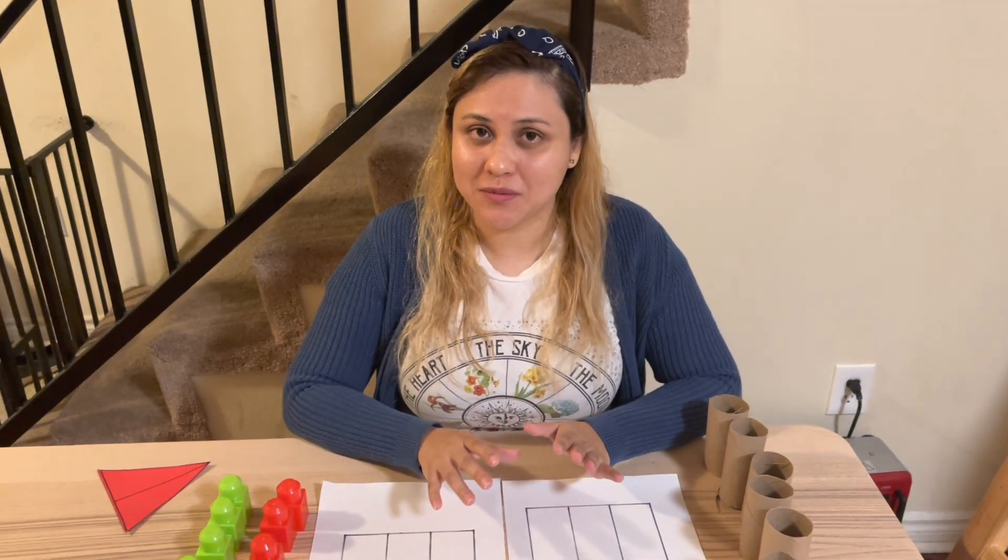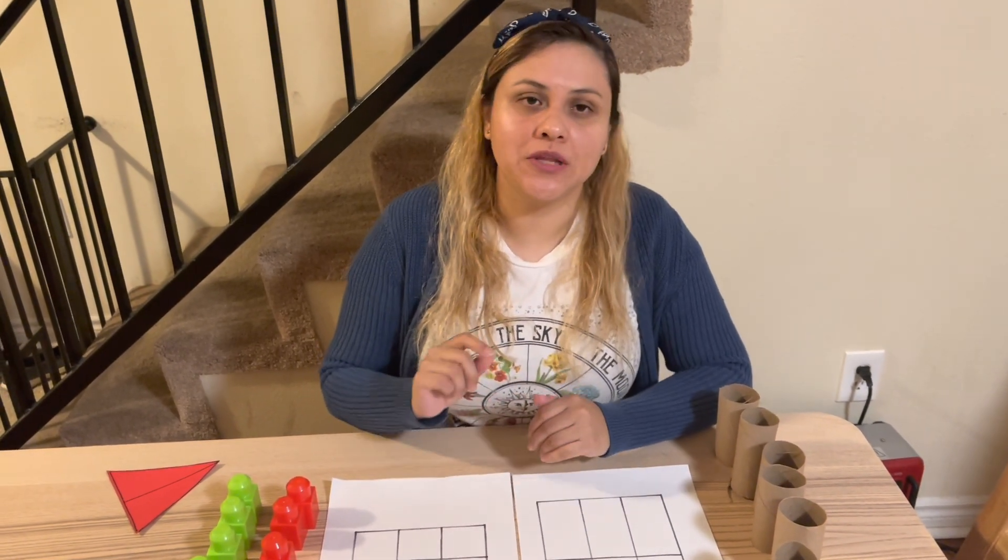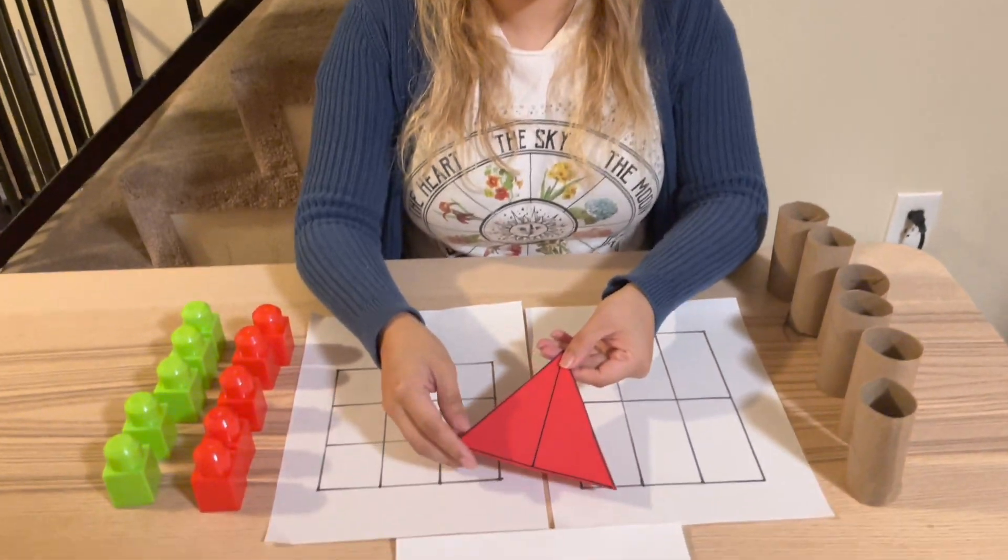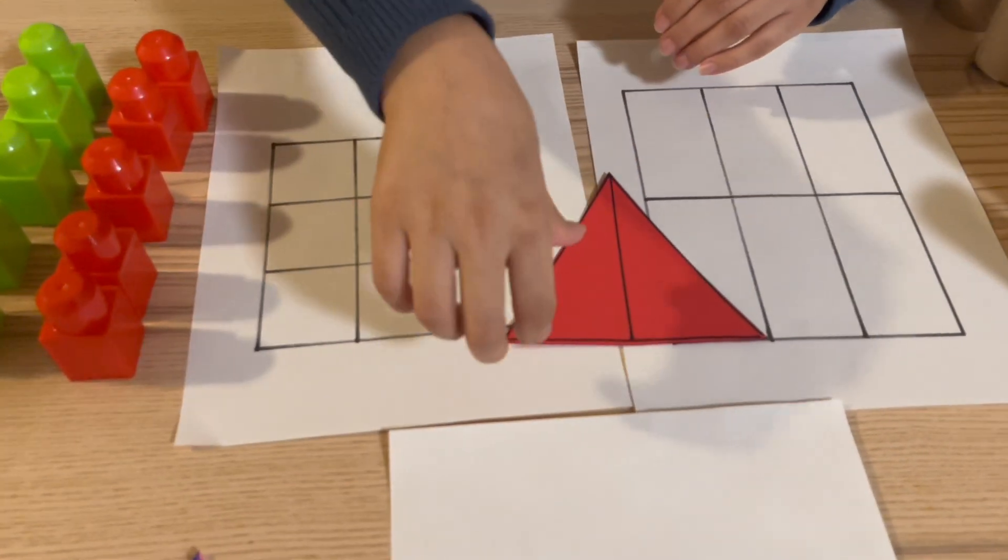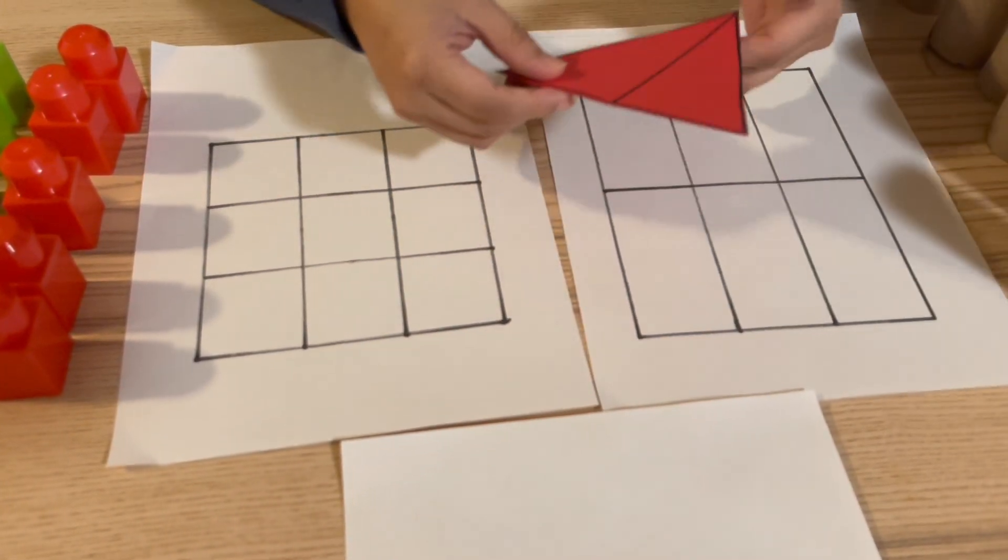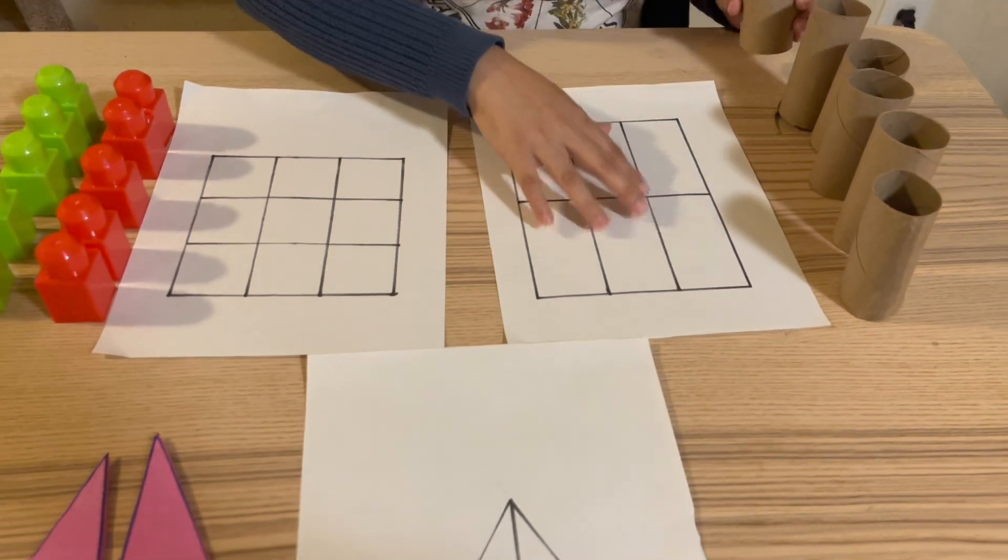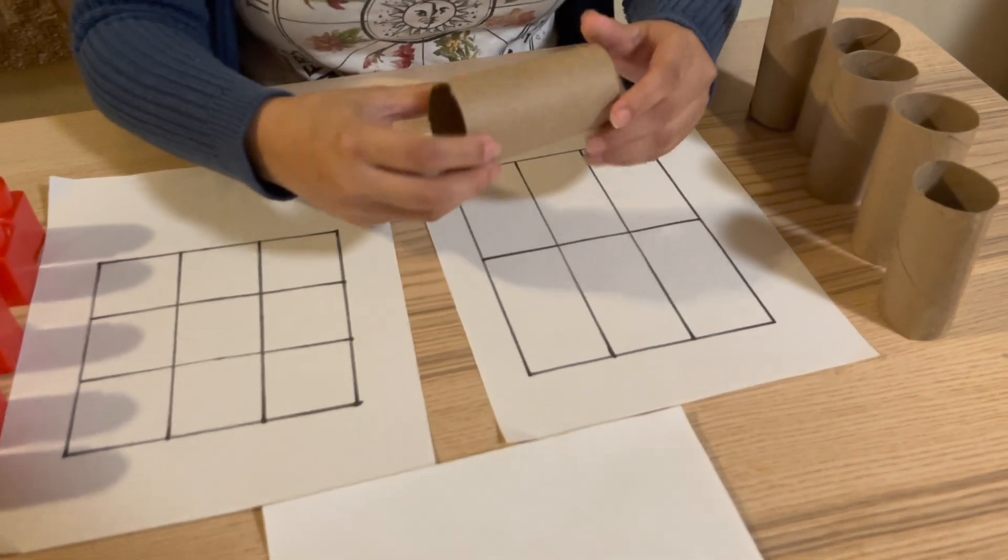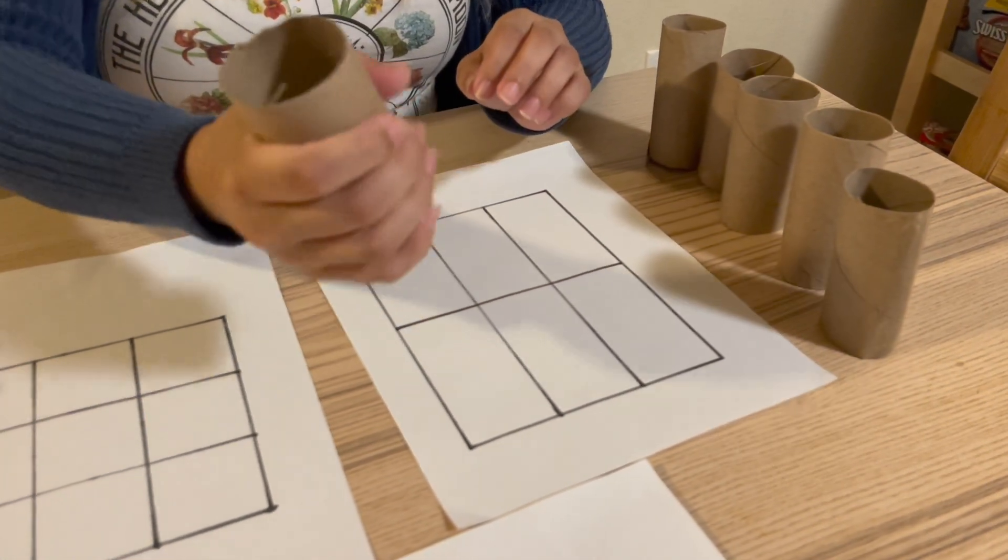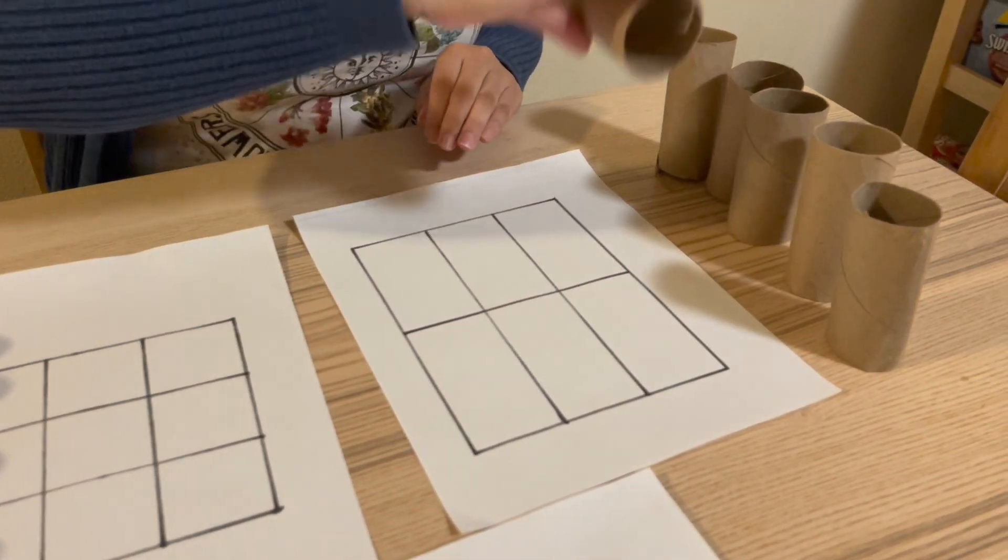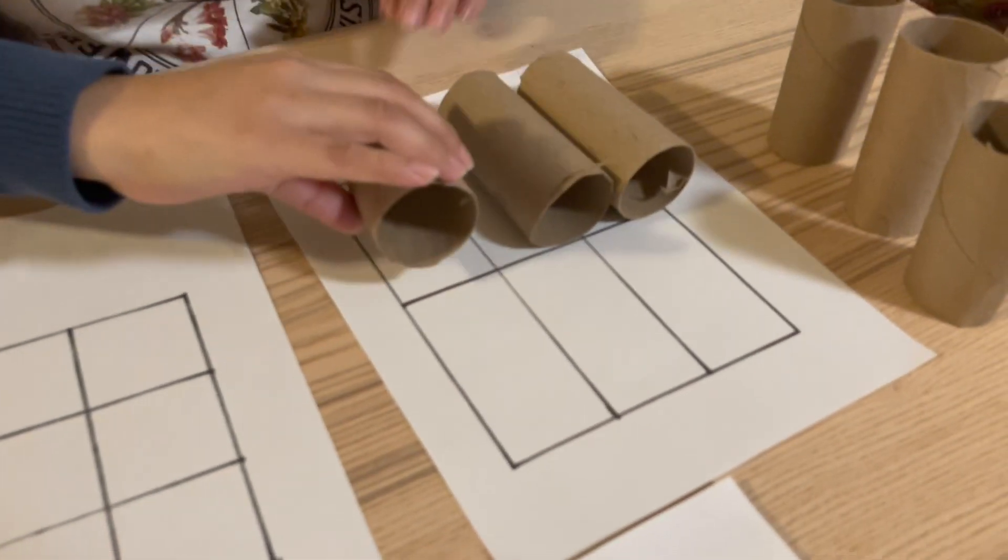I developed a few adaptations for this activity for students still developing their fine motor skills. When using paper, it's thin, so it can be hard for some students to pick up. A good adaptation is to cut toilet paper rolls, which are easier to grasp, and students can place the toilet paper roll onto the rectangle.